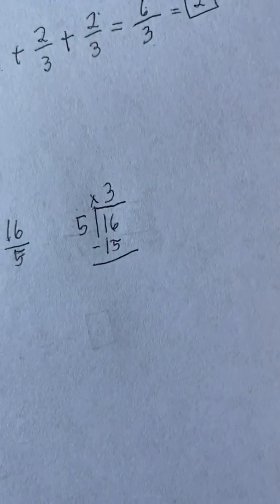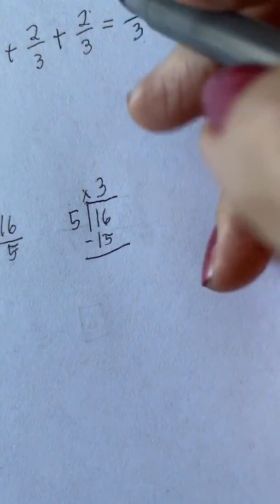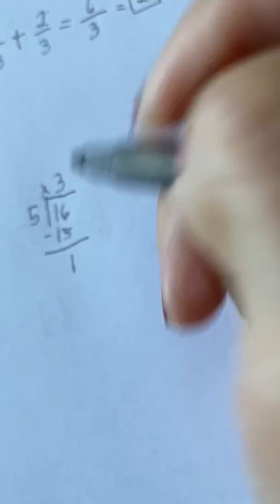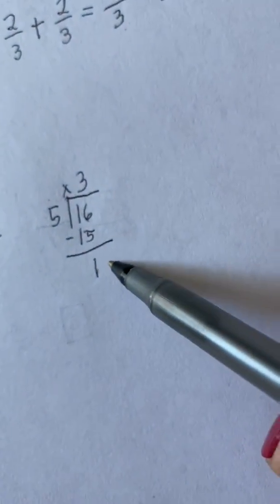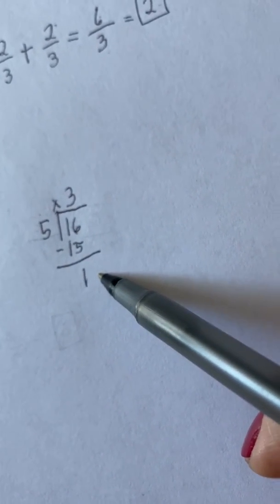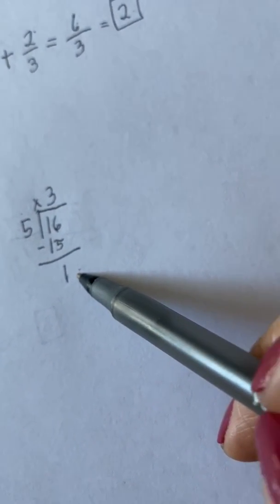Then 3 times 5 is equal to 15. Then you subtract. You will have 16 minus 15 is equal to 1. Your remainder 1 is very important. This remainder will become your numerator. So this becomes the numerator.